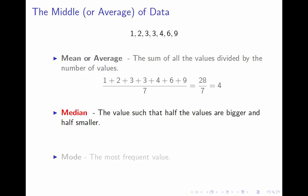The second measure is the median. The median strip in a road is the line such that half the road is to the left and half is to the right. The median of a data set is the value such that half the data is below and half is above. In our example, the number three has that property — three numbers are less than or equal to it and three are greater. Notice that the median and the mean aren't quite the same.